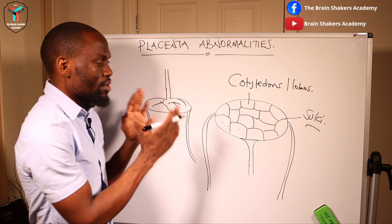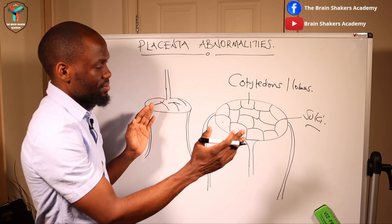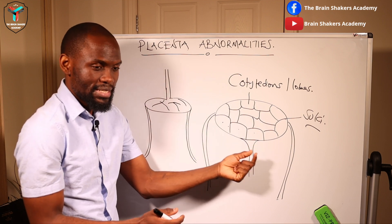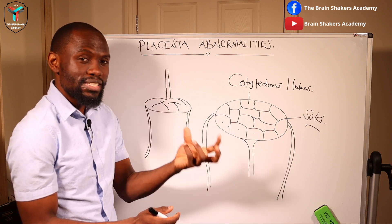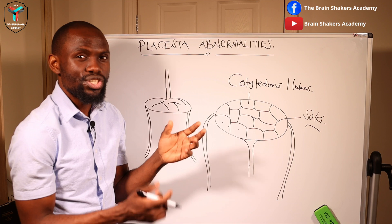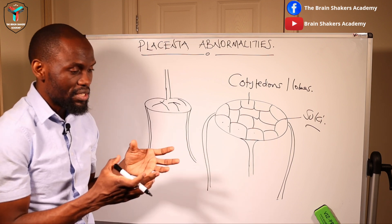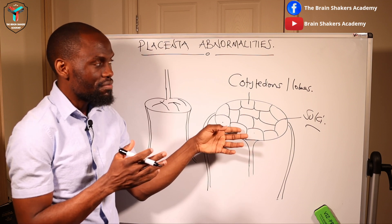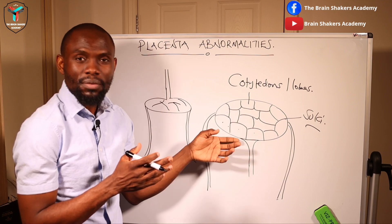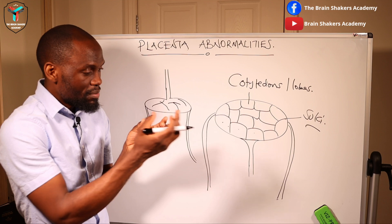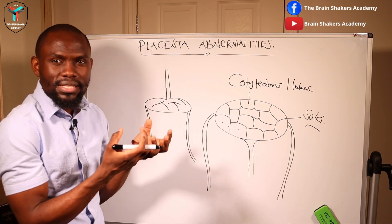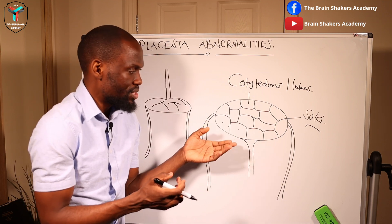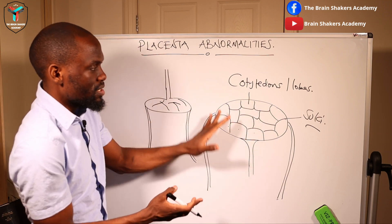From about the 16th week onwards the villi in the placenta tends to thin because of the huge demand for oxygen and nutrition from the growing fetus. But in the last four weeks of pregnancy, deposition of fibrin around the placenta reduces the transfer of nutrients and oxygen, and that is what contributes to placental insufficiency.